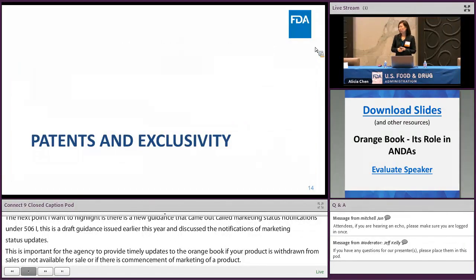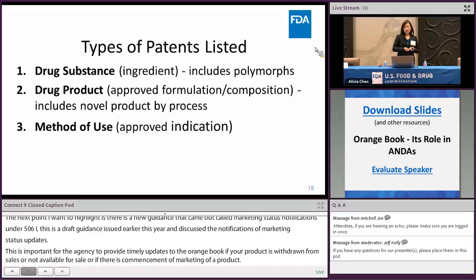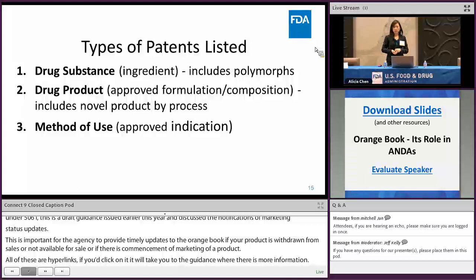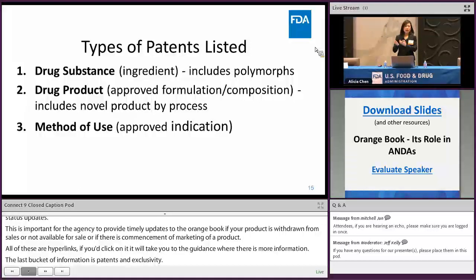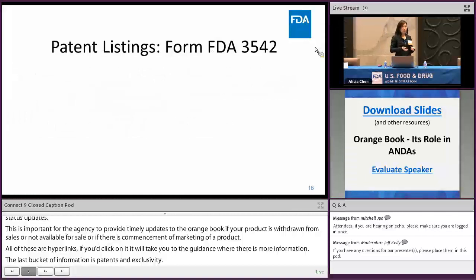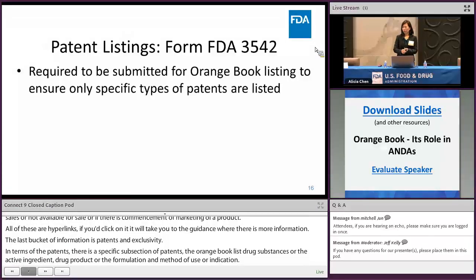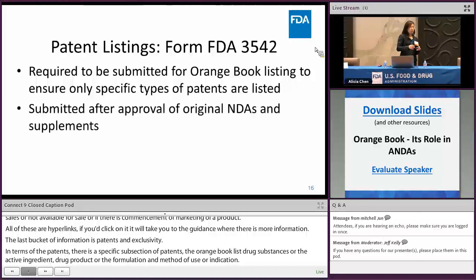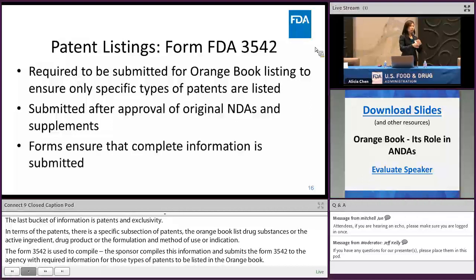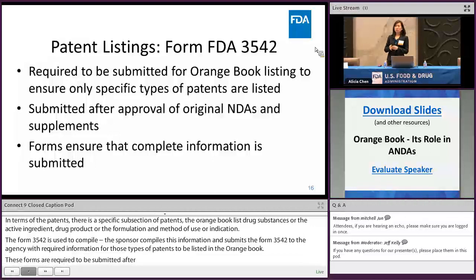The last bucket of information is patents and exclusivity. In terms of patents listed, the Orange Book lists drug substance (active ingredient), drug product (formulation), and method of use (indication) patents. Form FDA 3542 is used — the sponsor compiles and submits this form to the agency with required information for those types of patents to be listed in the Orange Book. The Orange Book's role is ministerial in these patent listings. These forms are required to be submitted after approval of the original NDAs or their subsequent supplements, providing standardization to ensure all necessary information is on file.